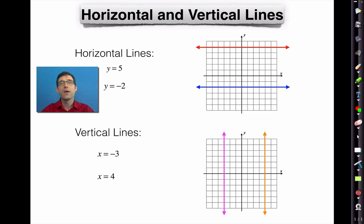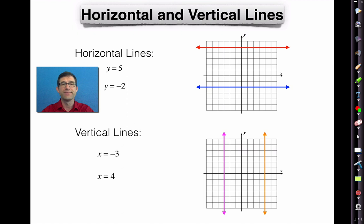These are very tricky. We're very used to equations of lines looking like y equals seven x minus two, or y equals one half x plus four. But that's when both the x-coordinate and the y-coordinate change on the line. With vertical and horizontal lines, one coordinate always stays the same, and that coordinate becomes its equation.